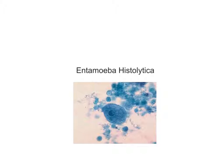Today we're going to talk about Entamoeba histolytica. This is an anaerobic parasitic protozoan, part of the genus group Entamoeba. It is the third leading parasitic cause of mortality after malaria and schistosomiasis.